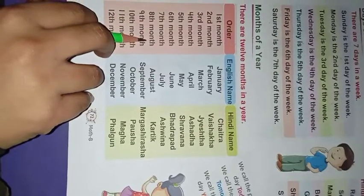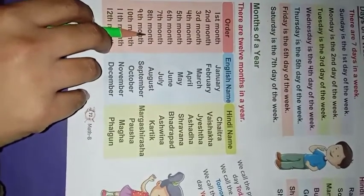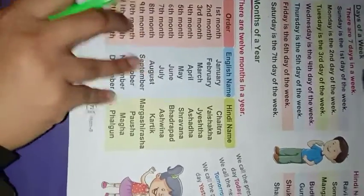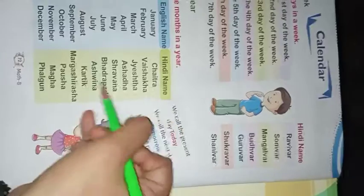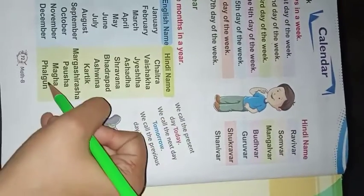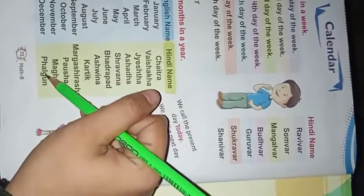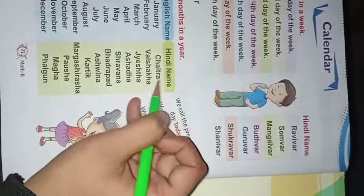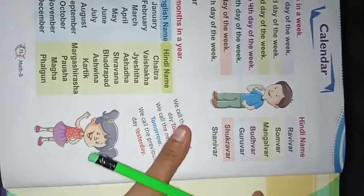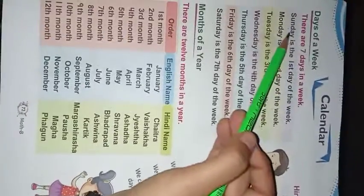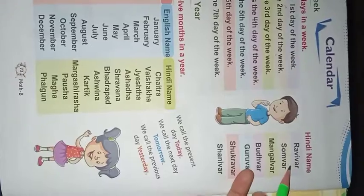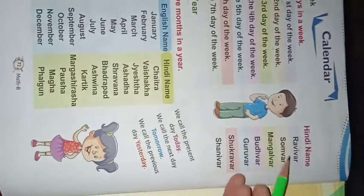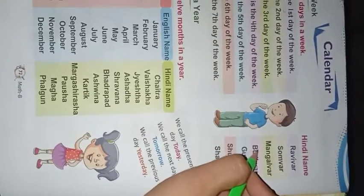For example, eighth month ki agar main baat karun - eighth month hamara koon sa hota hai? To aap turant fingers pe count karke bataenge ki August is the eighth month. Hindi names are given here; you should also know them. Hindi mein aapne mamma ko kai baar kehte suna hoga - Chaitra ka mahina chal raha hai, Vaishakh ka mahina chal raha hai. So you can learn the Hindi names from your family members. Similarly, days in Hindi are known as Ravivaar, Somvaar, Mangalvaar, Budhvaar. This is just a general reading.